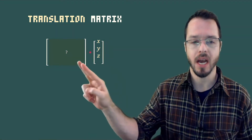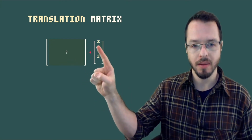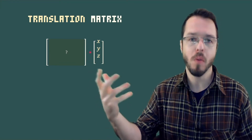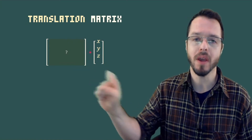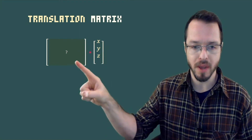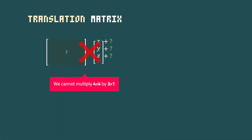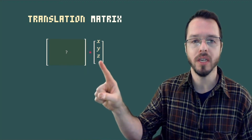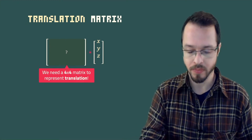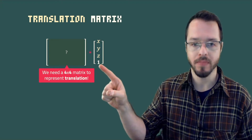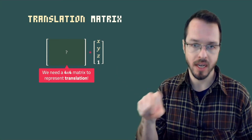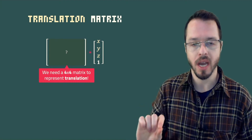If we look at how matrix multiplication works, we cannot achieve x plus something, y plus something, and z plus something with only a 3x3 matrix. We need an extra set of components, so we're going to have to use a 4x4 matrix. Also, one rule of matrix multiplication is we cannot multiply a 4x4 matrix by a 3x1 matrix, so we need to add an extra component. We need a 4x4 matrix to represent translation — translation is the odd one out.